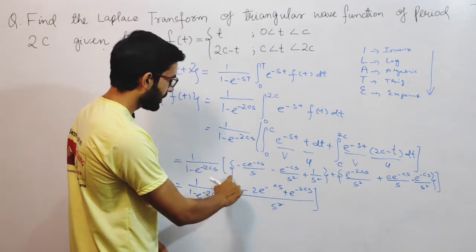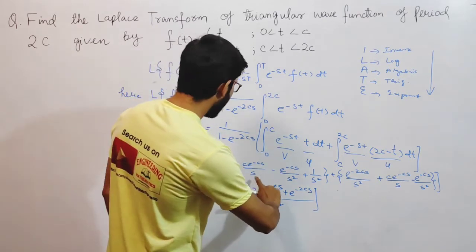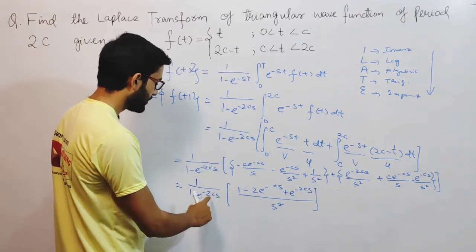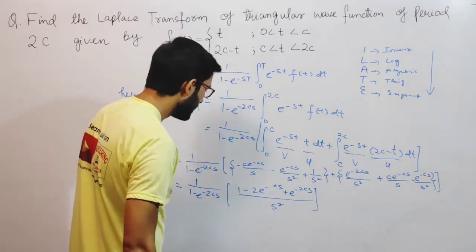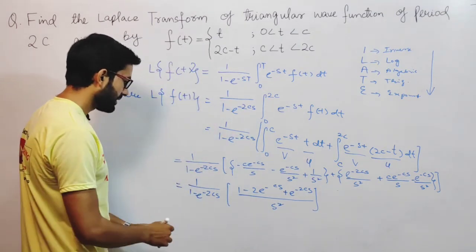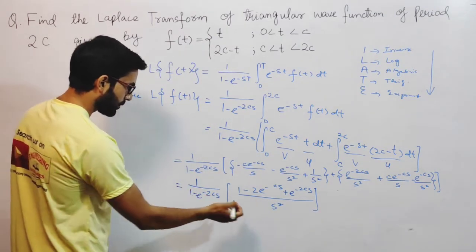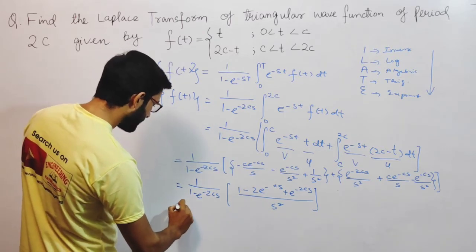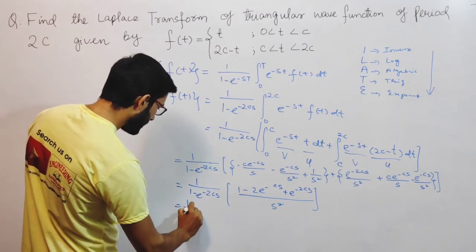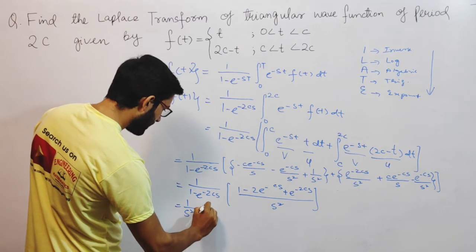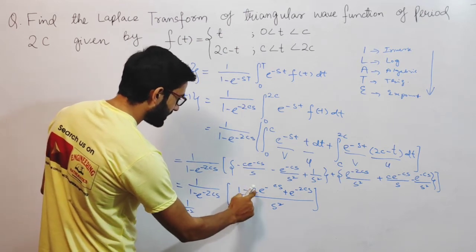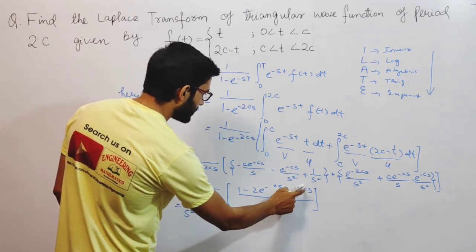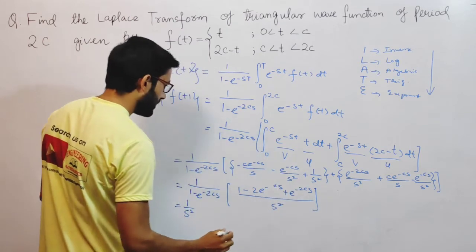After applying integration by parts and substituting limits, I perform elementary transformations to simplify the expression. I take out 1/s² as a common factor. Inside, I get the expression: 1 minus 2e^(-cs) plus e^(-2cs).